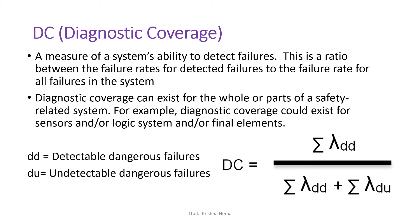Diagnostic coverage is a measure of the system's ability to detect failures. It is the ratio of the failure rate for detected dangerous failures to the failure rate for all failures in the system. The formula is: DC = Σλ_DD / (Σλ_DD + Σλ_DU), where DD is detectable dangerous failures and DU is undetectable dangerous failures. Diagnostic coverage can exist for the whole or parts of the safety-related system — for example, for sensors, logical system, or final elements.